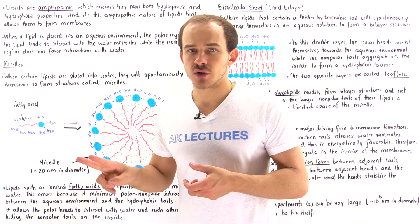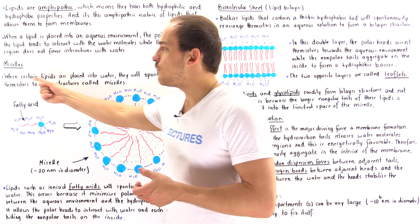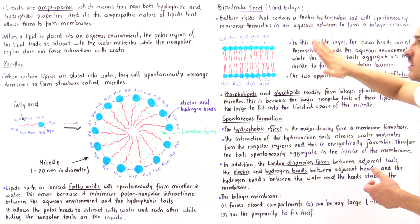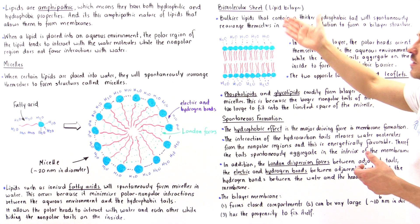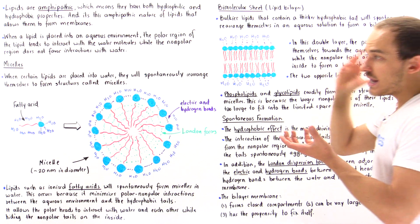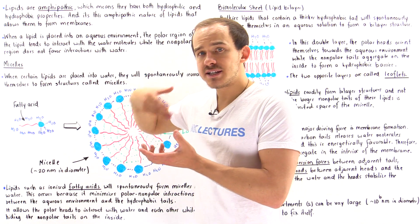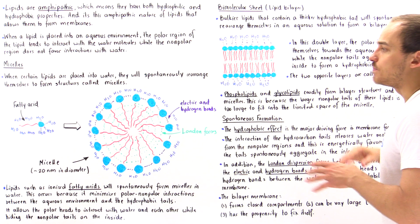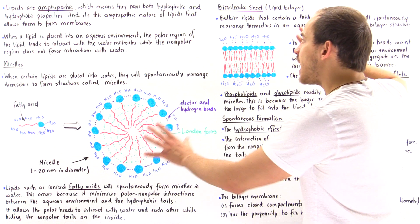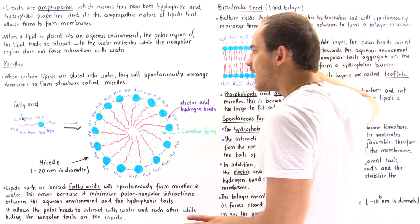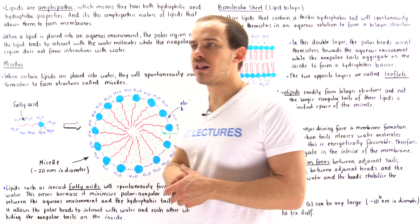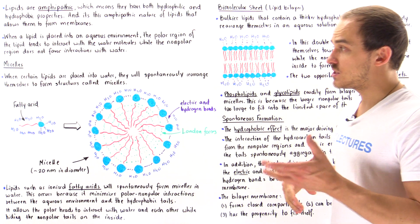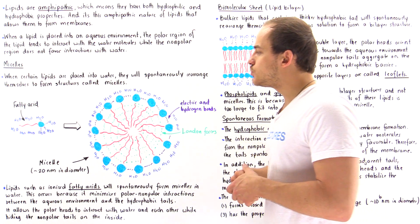There are two types of structures that lipids can form. We can form micelles, or we can form the bimolecular sheet — the lipid bilayer — which is the cell membrane found around the eukaryotic cells of our body. The type of structure that is formed depends on the type of lipid molecule present in the aqueous environment.